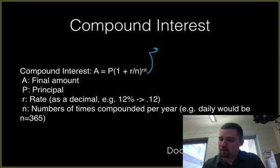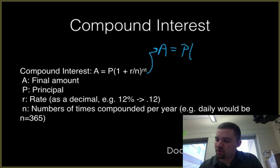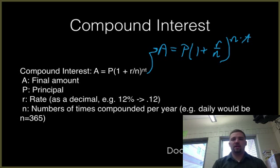This equation, if you can't really understand what that says, it's A equals P times 1 plus R divided by N raised to the N times T. Okay, so that R slash N is R divided by N, and in this, A is the final amount.